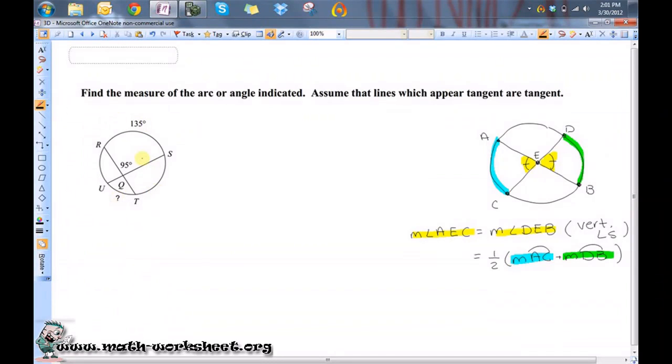If I want to solve this problem, I'm going to have to use the fact that if you have two chords that intersect within the circle, first of all, they're going to create vertical angles, and the vertical angles are going to be equal in measure.